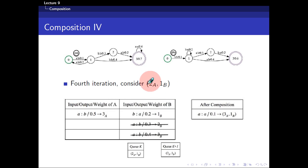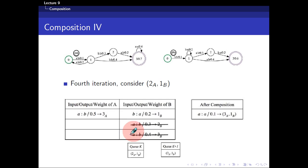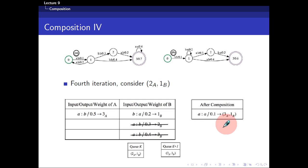In the fourth iteration, we visit (2A, 1B) and consider everything coming out from 2A — one transition AB 0.5 — and everything from 1B with three transitions. The two transitions using A as input don't match. We want the input that matches the output here, so the new transition has input A, output A, weight 0.5×0.2=0.1, reaching (3A, 1B). Since (3A, 1B) is already in the queue, we don't add it again. After this fourth iteration, we move on to (3A, 1B).